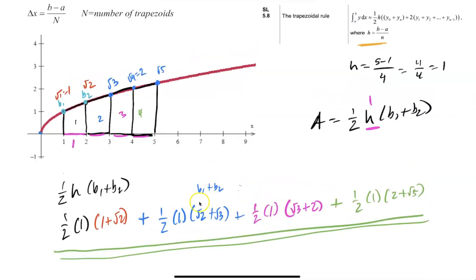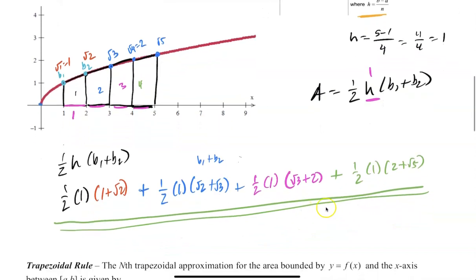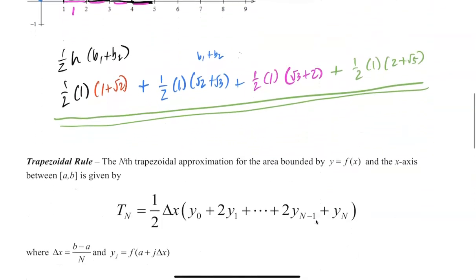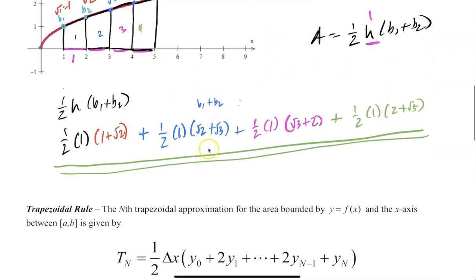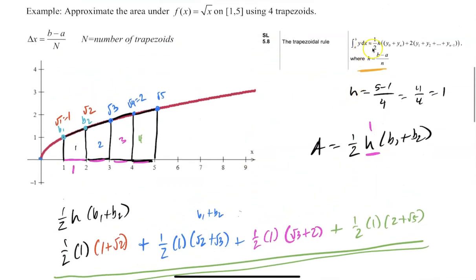You can do each trapezoid separately and then add them up, or do them all together, and you get a decimal approximation. This is the trapezoid rule — more commonly used in AP Calculus. In IB, they give you the shorthand formula on the formula sheet. If you notice, in all of them I had a 1/2 and a height of 1 that could be factored out, but it's much easier to just find the area of each trapezoid individually.